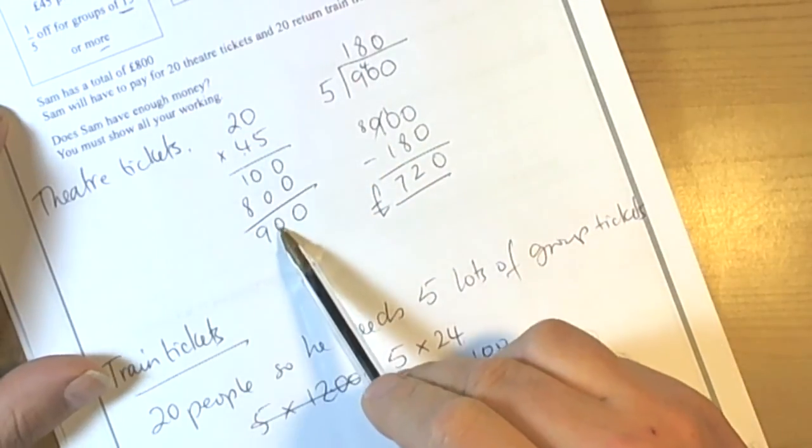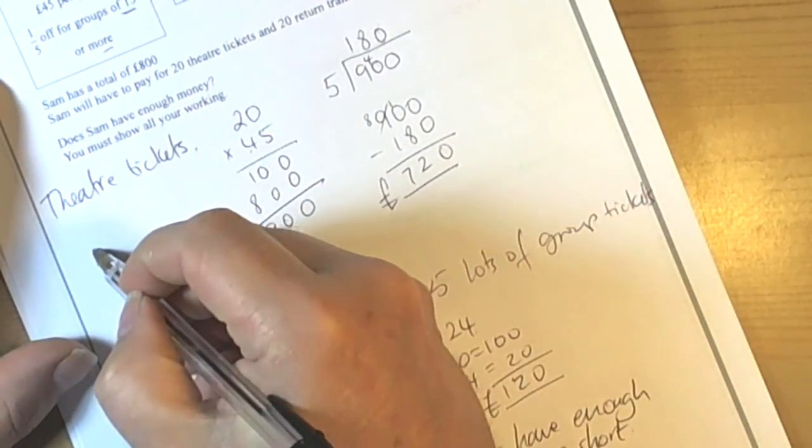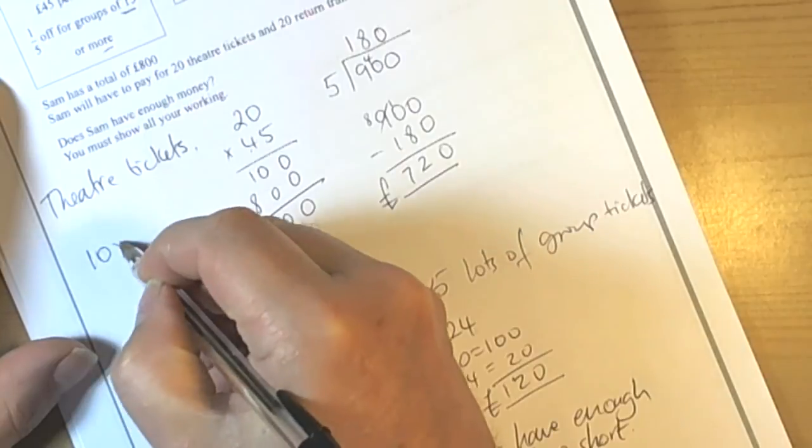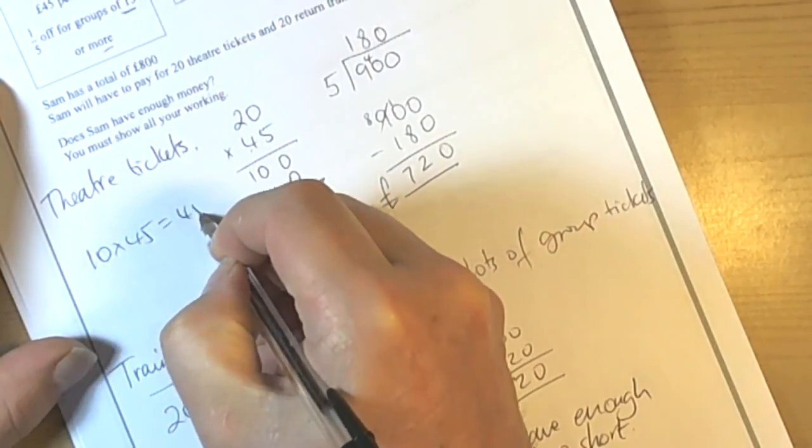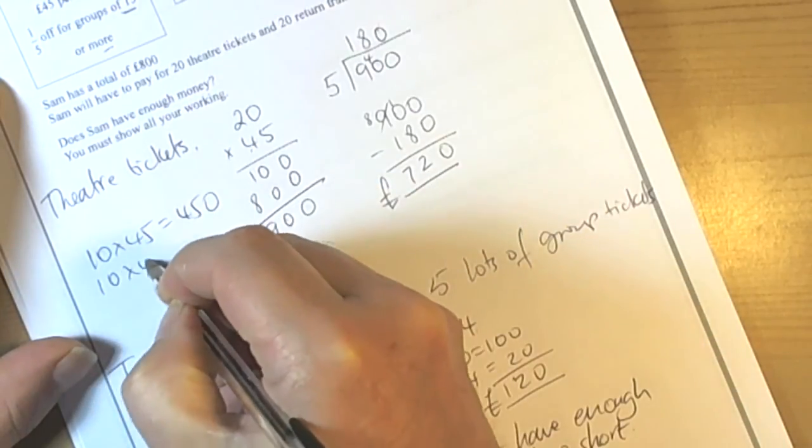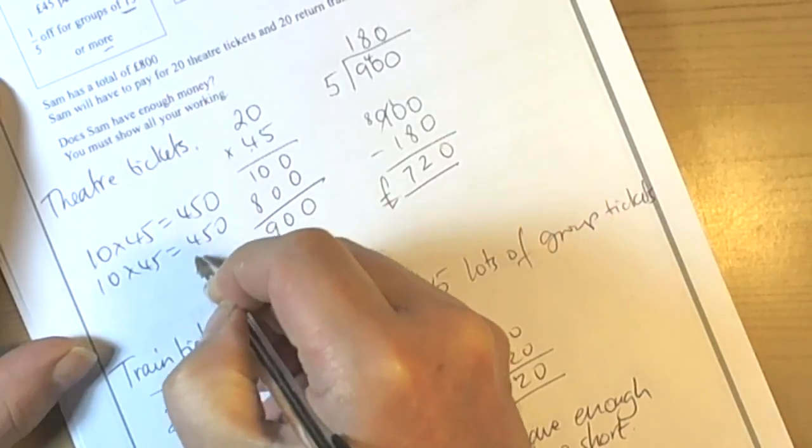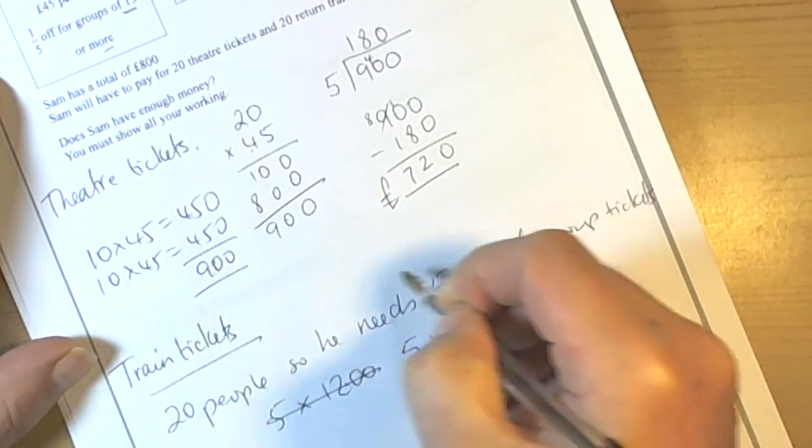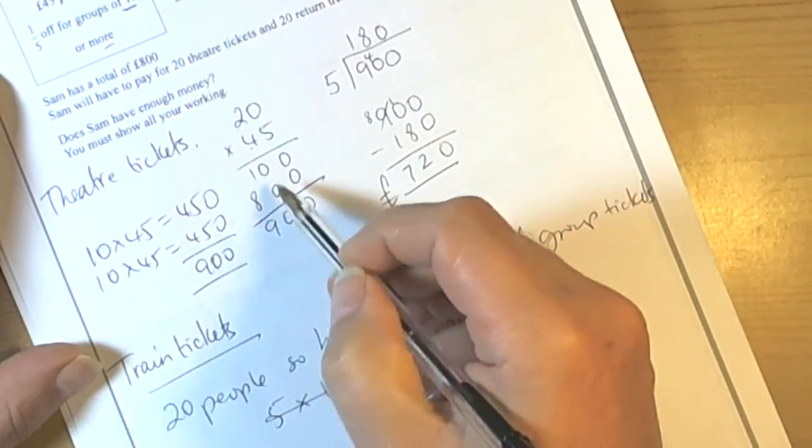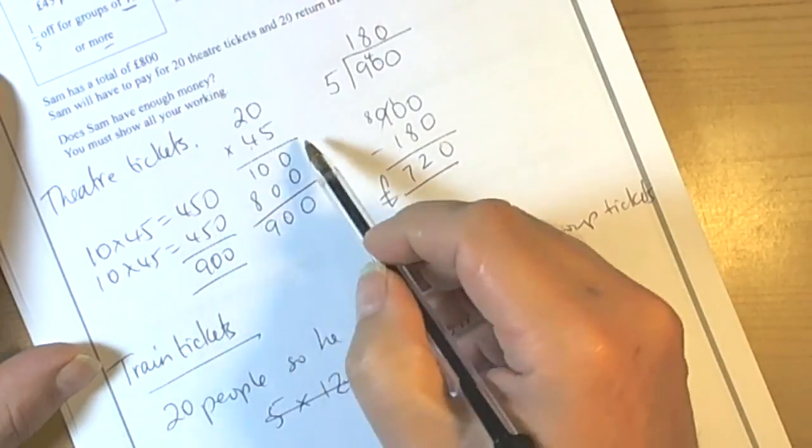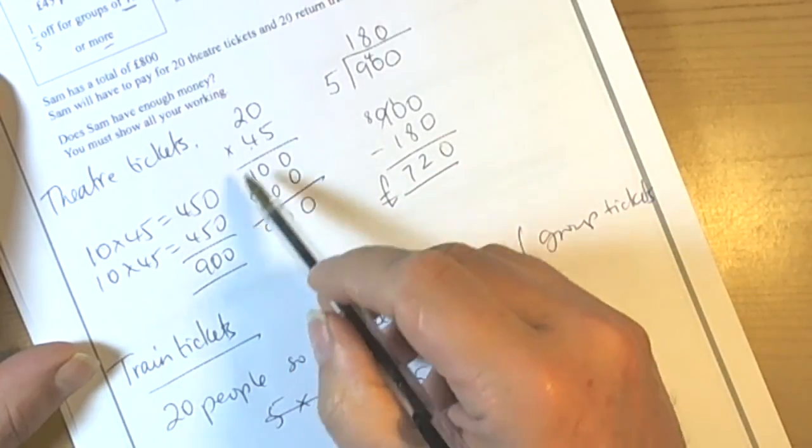If you're not happy with the traditional method for multiplying, then an alternative way would have been to have done 10 times 45, 450, another 10 times 45, 450, and that would have given you 900 as well. So, we can look for alternative methods, but learn something that works for you, so that you can get the marks.